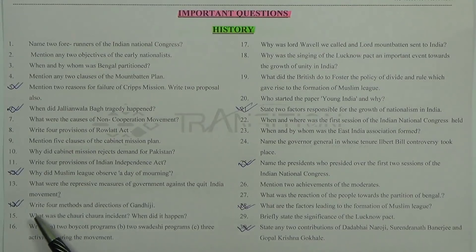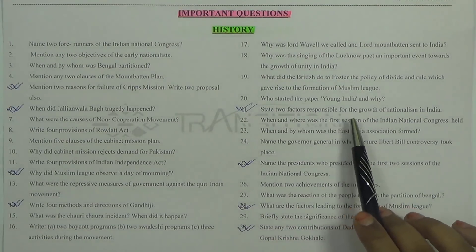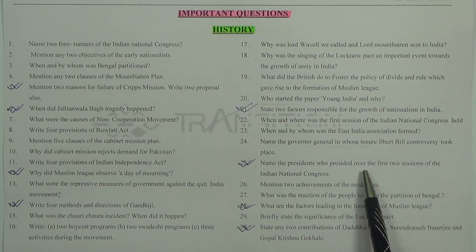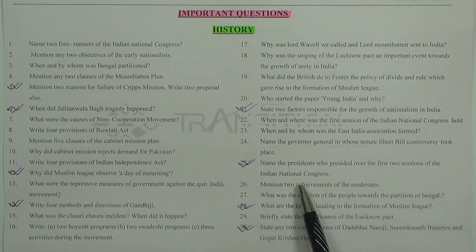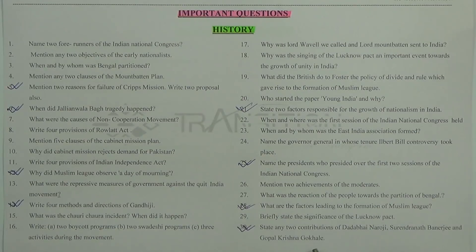Further important history questions include: Question 14 — write 4 methods and directions of Gandhiji; Question 21 — state two factors responsible for the growth of nationalism in India; Question 25 — name the presidents who presided over the first two sessions of the Indian National Congress; Question 28 — what are the factors leading to the formation of the Muslim League; and state any two contributions of Dadabhai Naoroji, Surendranath Banerjee, and Gopal Krishna Gokhale. Please give a little more focus on the tick-marked questions.